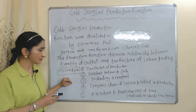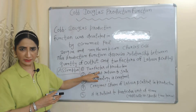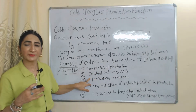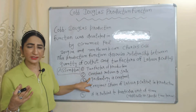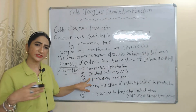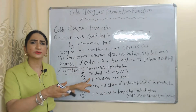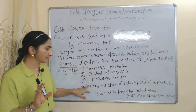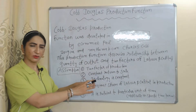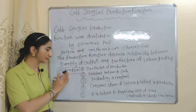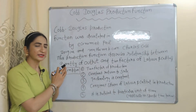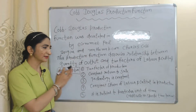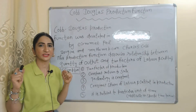This production function is based on some assumptions: two factors of production — labor and capital — constant return to scale, technology is constant, there is a constant share of labor and capital, and it is related to a particular time period, meaning we can apply this production function in a specific time period only.